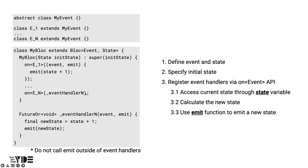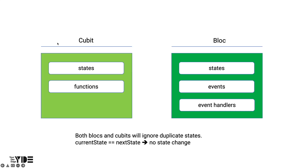Inside the event handler, the new state is computed and the current state value can be accessed through the state variable provided by Bloc. When the new state is calculated, the new state is dispatched to the state stream using the emit function provided by Bloc. One thing to note here is that emit should only be called within an event handler.